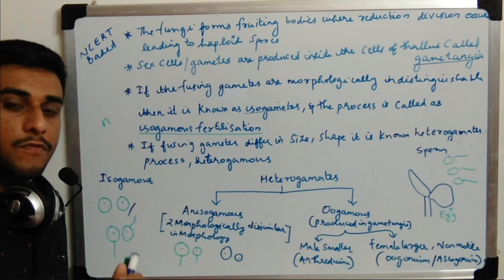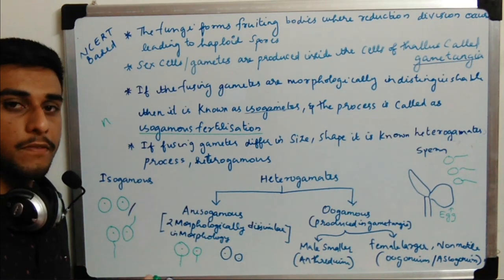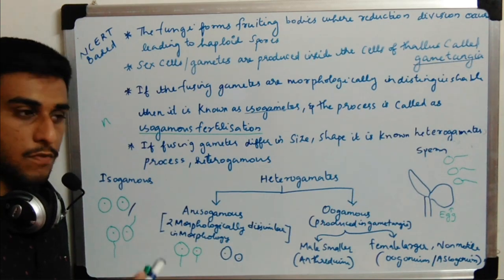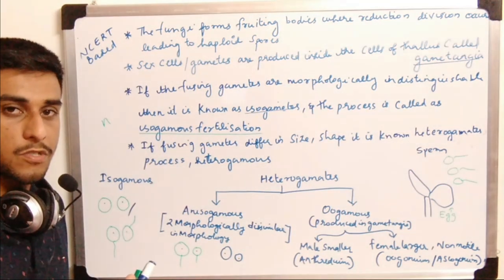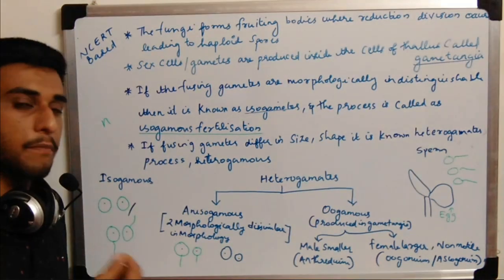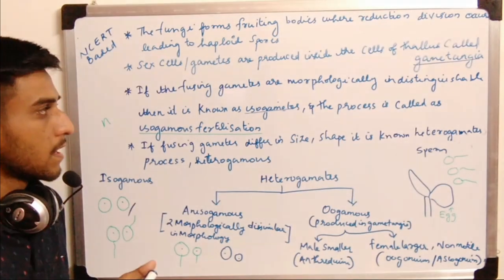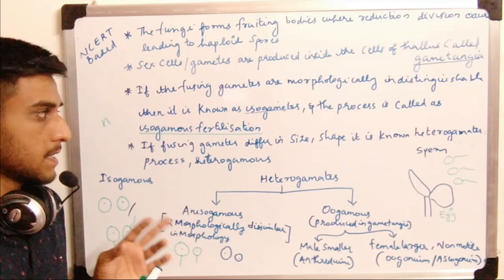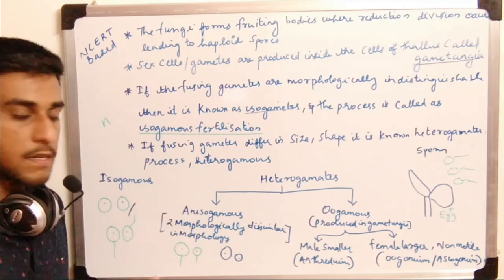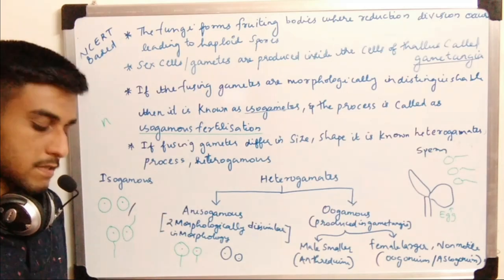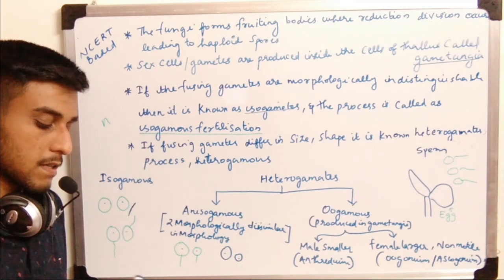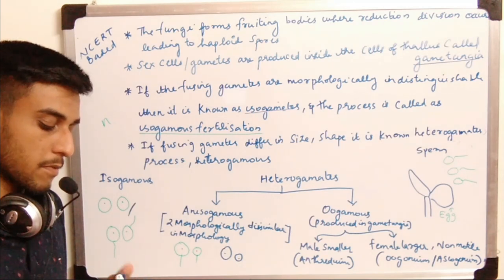In the antheridium, male gametes will be formed. In the female gametangium — the ascogonium — the female gametes will be formed. If the fusing gametes are morphologically indistinguishable, they are known as isogametes.